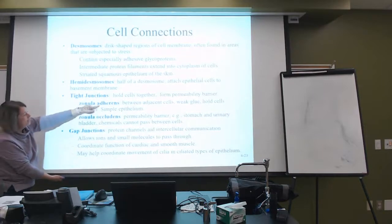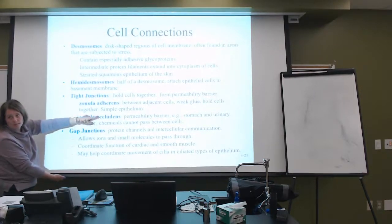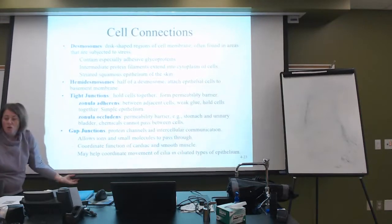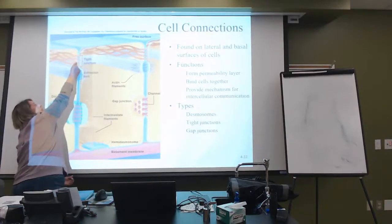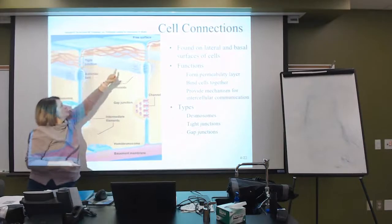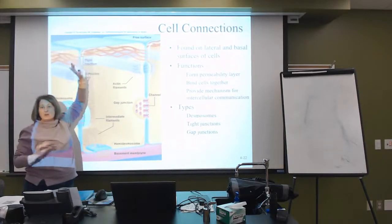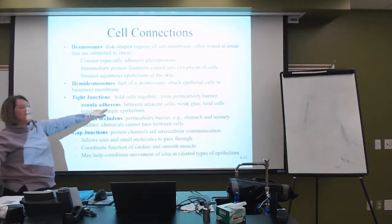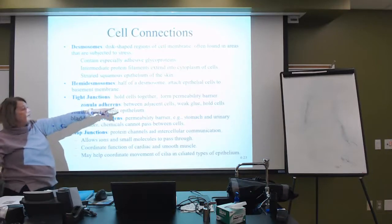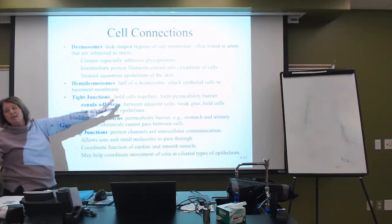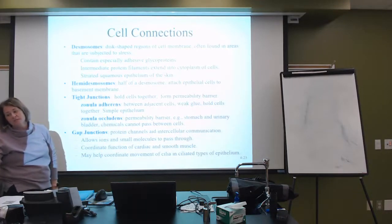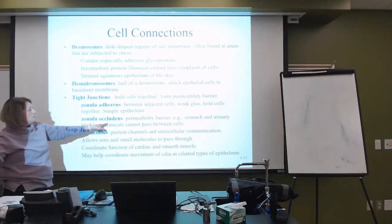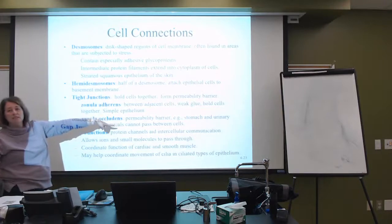Tight junctions — do you remember in the video the zonula adherens and zonula occludens? Zonula means zone: the zone to adhere, the zone to occlude. Tight junctions hold the cell together and are represented going all the way around the cell on all sides. The zonula adherens is an area between adjacent cells acting like glue, simply helping to hold those cells together — a good example is simple epithelium.